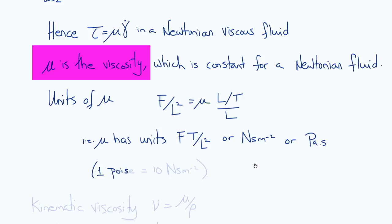In some texts that use CGS units instead of SI units, you'll see the term poise, and one poise is 10 pascal seconds, or 10 newton seconds per meter squared.